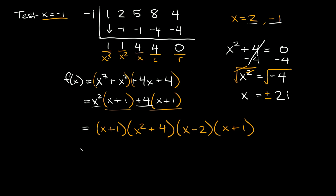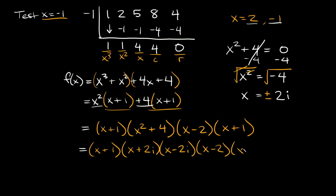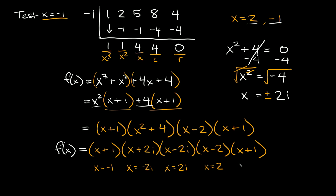So if you want to write all these factored out, it would be x plus 1, times x plus 2i, times x minus 2i, times x minus 2, times x plus 1. Setting each factor equal to zero gives us our five zeros: x equals negative 1, x equals negative 2i, x equals positive 2i, x equals positive 2, and x equals negative 1. So we have our five solutions, 1, 2, 3, 4, 5.